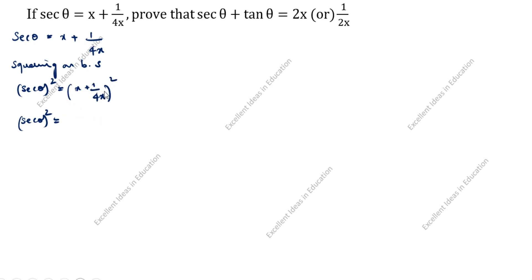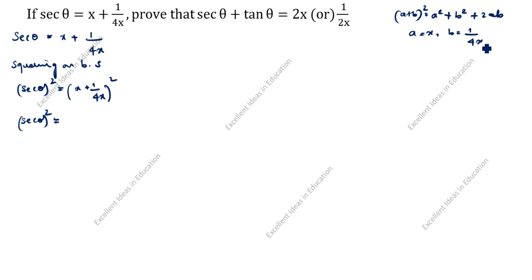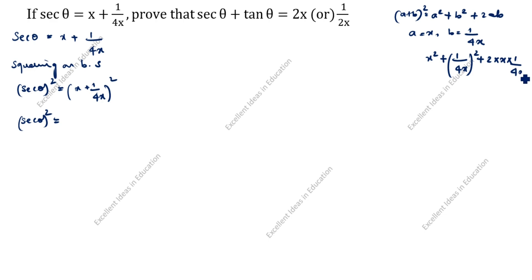How do we split this? Using the formula a plus b whole square equals a square plus b square plus 2ab. Here a is x and b is 1 by 4x. So we get x square plus 1 by 4x whole square plus 2 into x into 1 by 4x — the x's cancel and 2 divided by 4 gives 1 by 2.